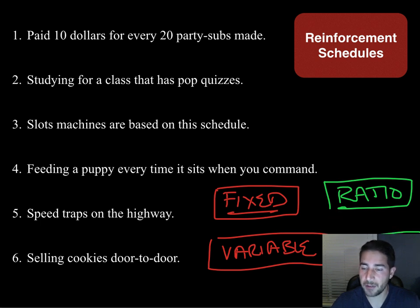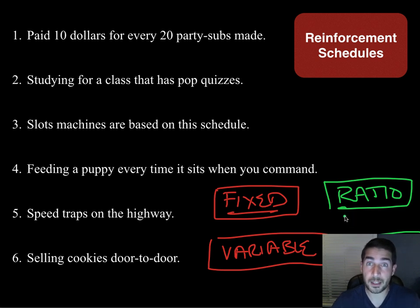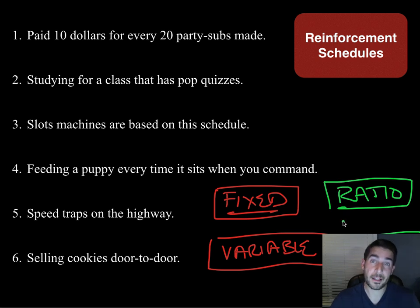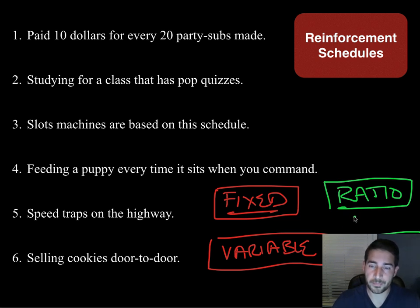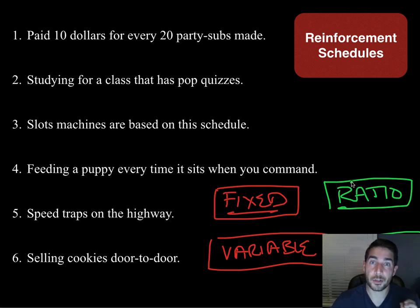Interval is just an amount of time. You don't have to do anything. Every 20 minutes, you're going to get rewarded whether or not you do anything. So your behavior has nothing to do with it. So: fixed means you know when it's going to happen, variable means you don't, ratio means your behavior affects your chances of the reward, and interval means it doesn't.